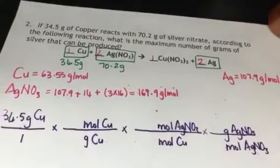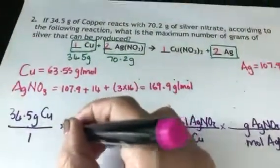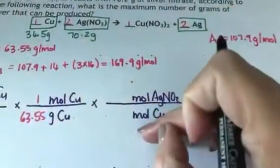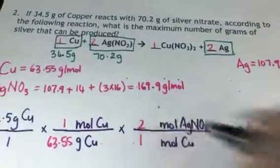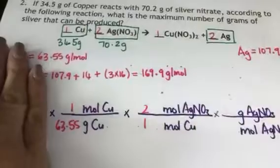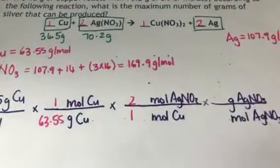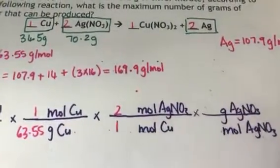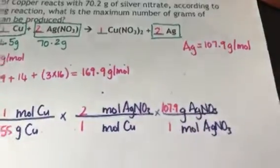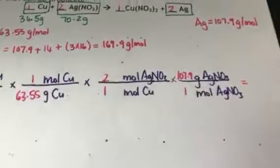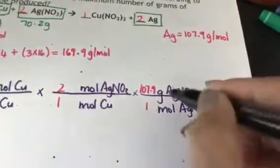Now it's easy to put my values in. To find how many moles of copper, I use the molar mass: one mole of copper is 63.55 grams of copper. For the middle part, I use my mole ratio — two moles of silver nitrate to one mole of copper, a ratio of 2 to 1. So this is a mole-to-mole calculation. Using the molar mass of silver nitrate — one mole is equal to 169.9 grams — I calculate and get an answer of 76.2 grams of silver nitrate.